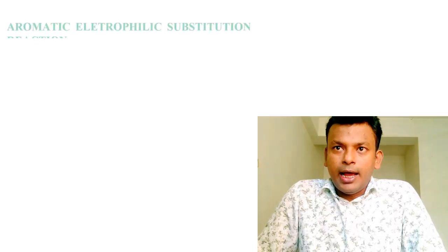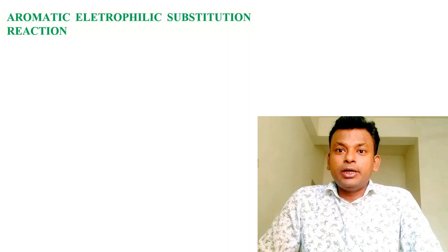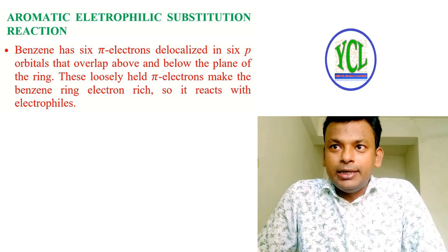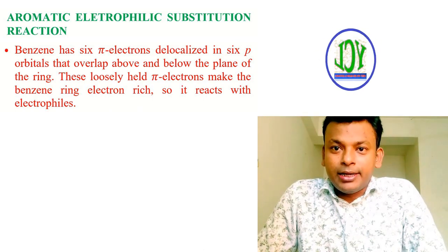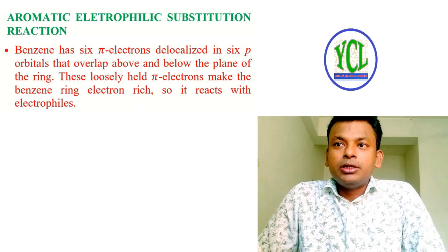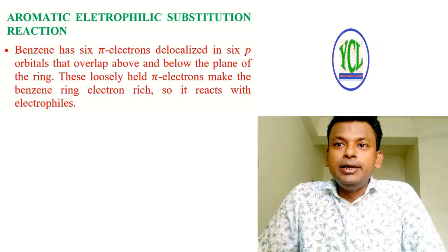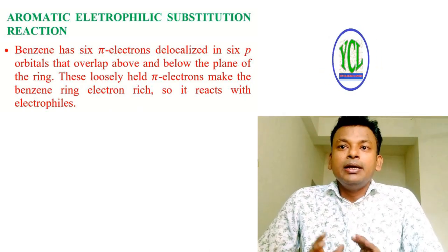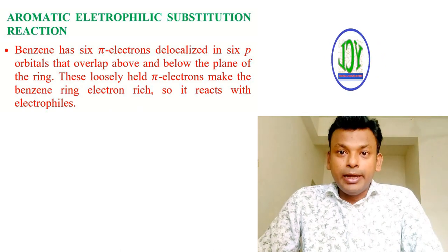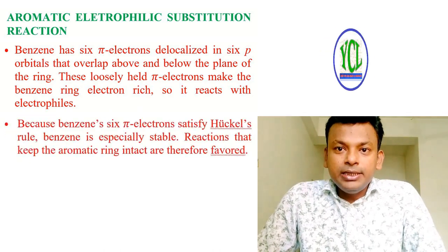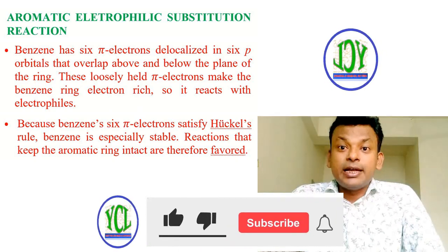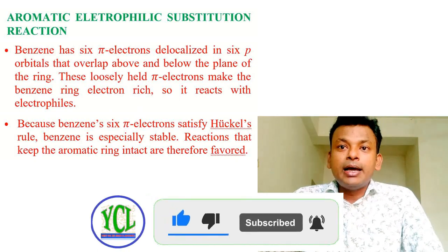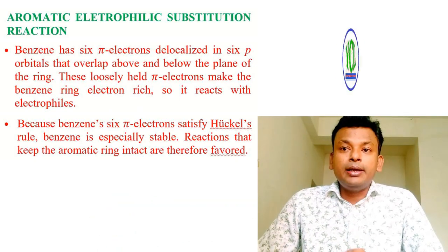Aromatic electrophilic substitution reaction: benzene has six pi electrons delocalized in six p orbitals that overlap above and below the plane of the ring. These loosely held pi electrons make the benzene ring electron-rich, so it reacts with electrophiles. Because benzene's six electrons satisfy Hückel's rules, benzene is specially stable, and reactions that keep the aromatic ring intact are therefore favored.